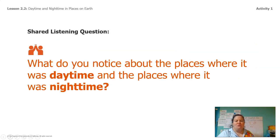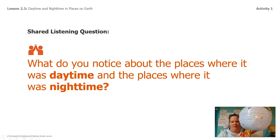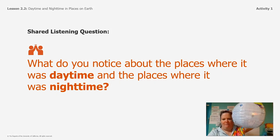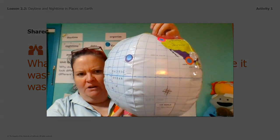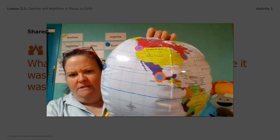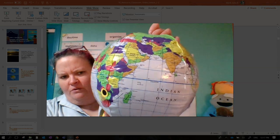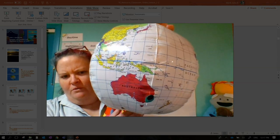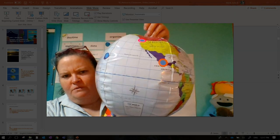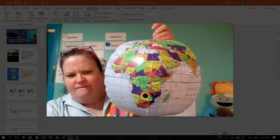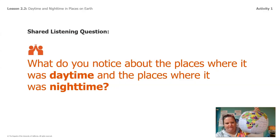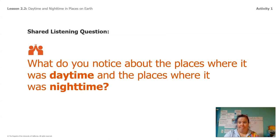So what do you notice about the places where it was daytime and the places where it was nighttime? Talk about that with your partner. Let me make the globe really big so you can look at where those stickers are. What did you notice about the places where it's daytime and the places where it's nighttime?